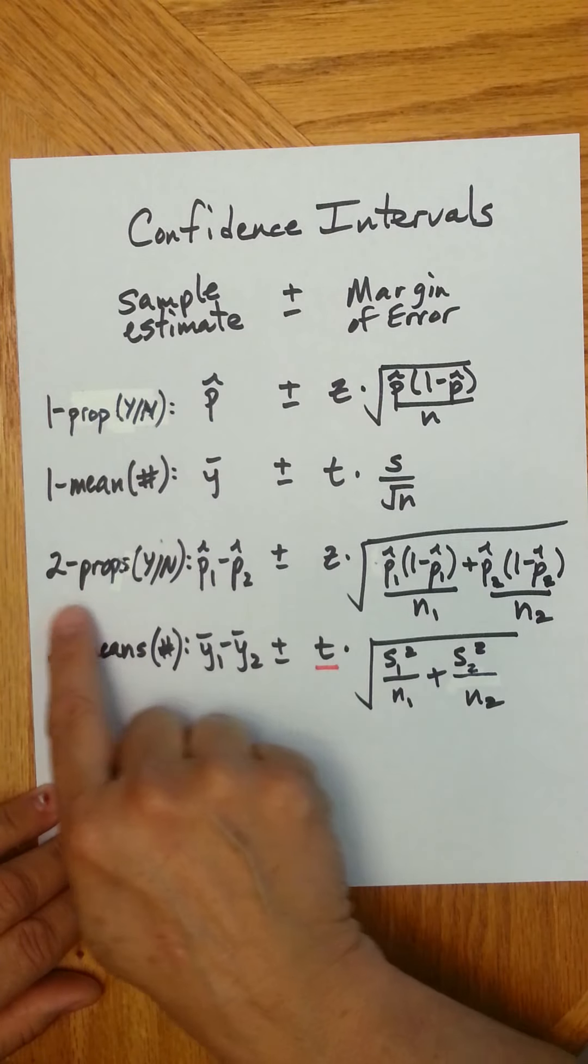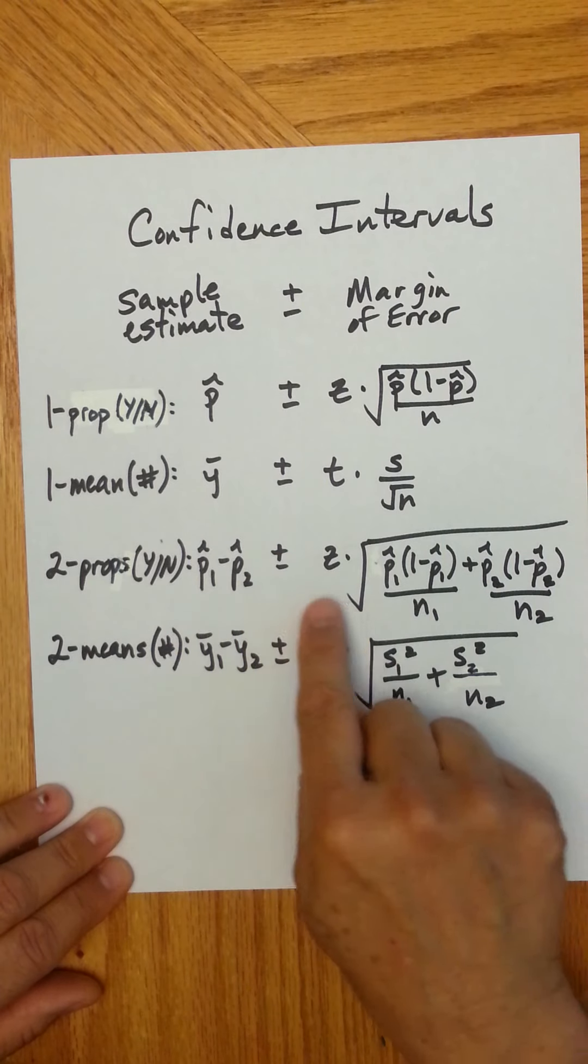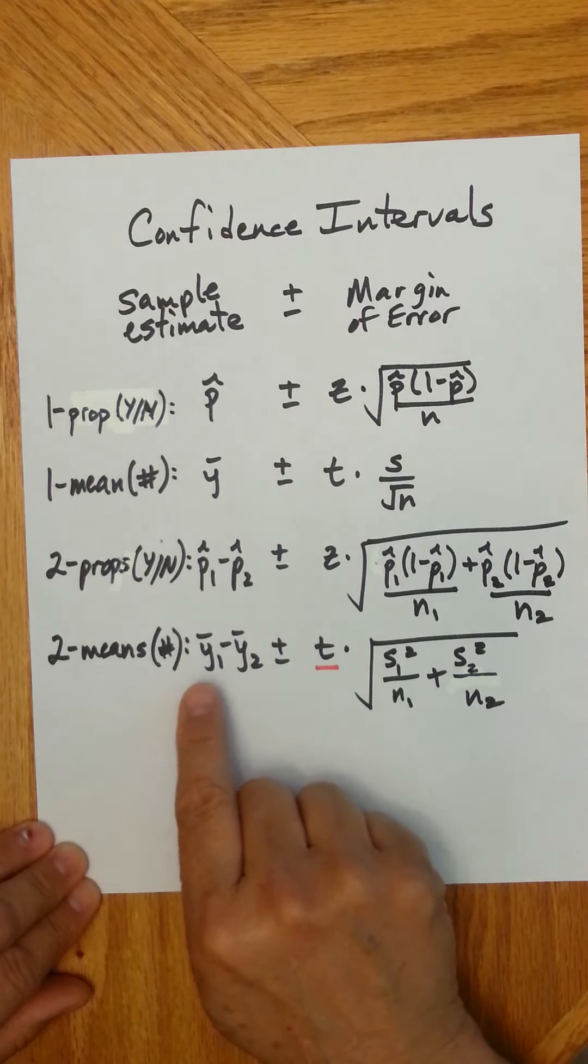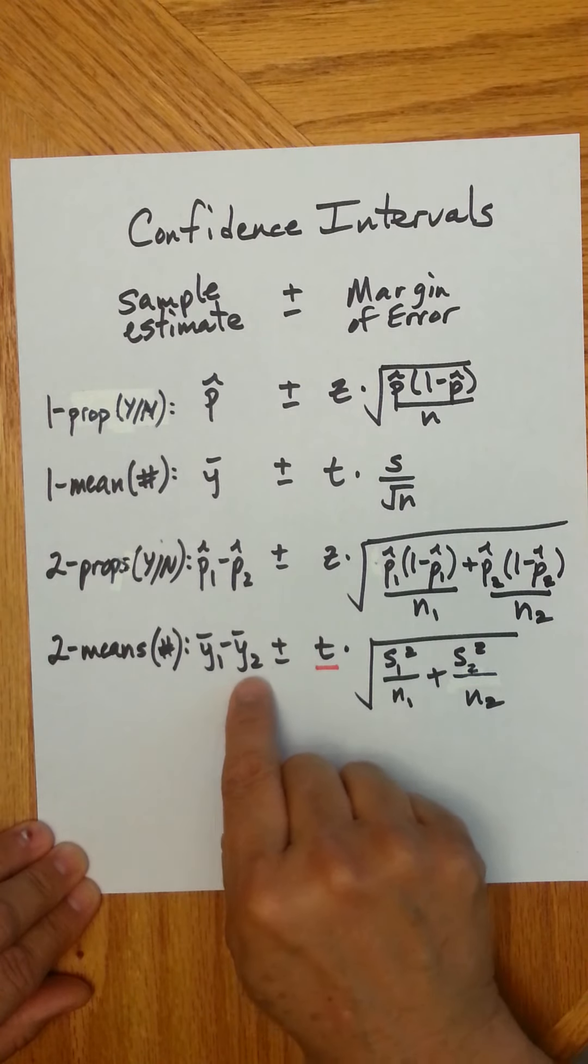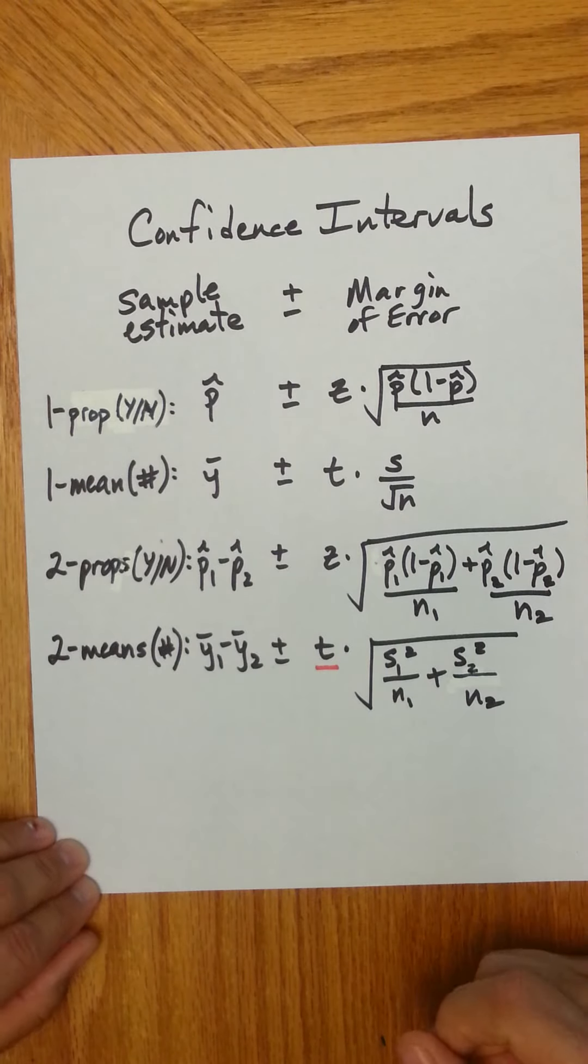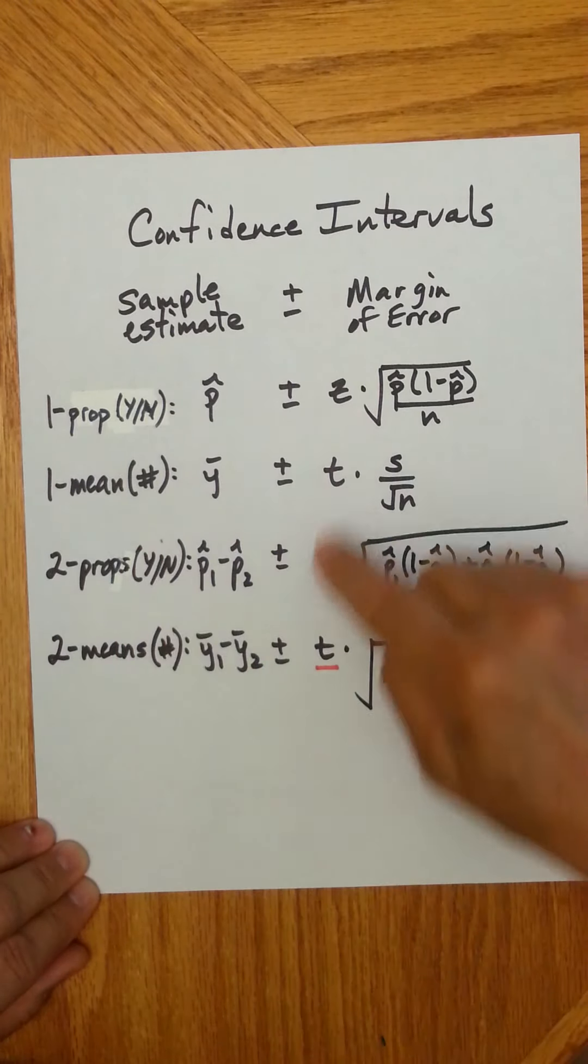For the sample estimate for the difference in two proportions, you subtract p-hat one minus p-hat two. Then you add or subtract margin of error. For two means, you subtract the two sample means, and then add or subtract margin of error. You can see the similarities, and hopefully what you can also see is that when you have yes-no traits, you're using z. When you have numerical traits, you're using t.